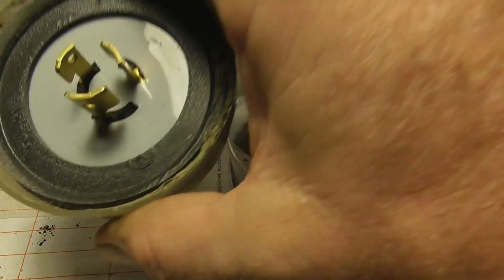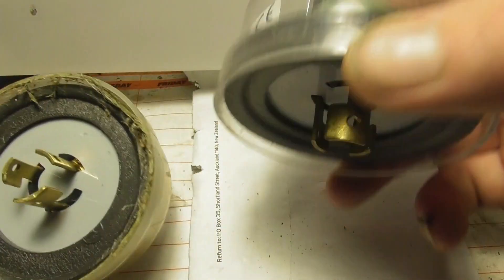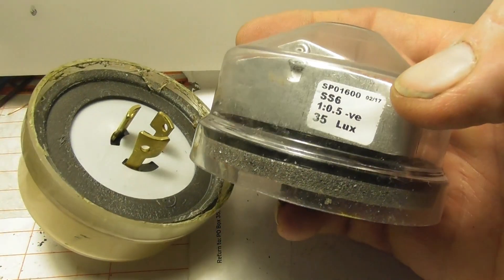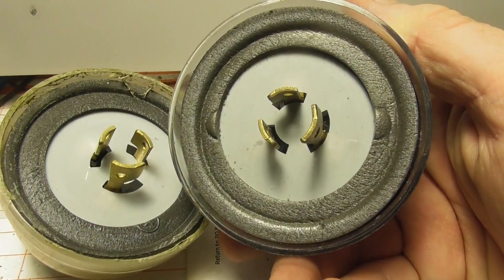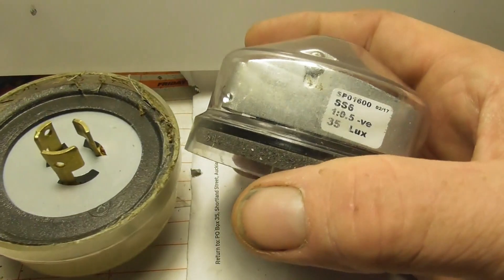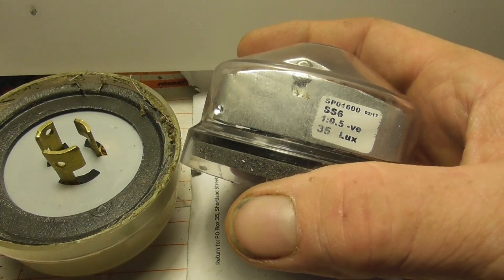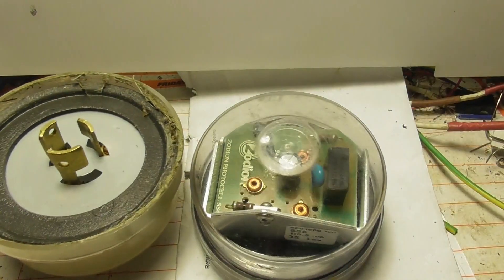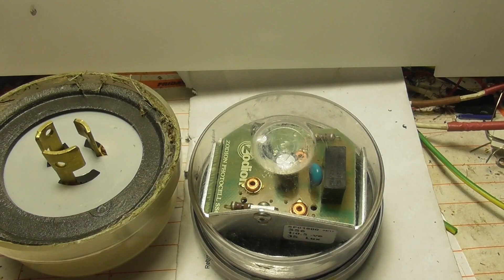And this is an SS6, 35 lux, so it switches in darker conditions. Lower lux is darker. That's the Zodian ones. Then you have these little other photocells which are around. There's heaps more varieties.